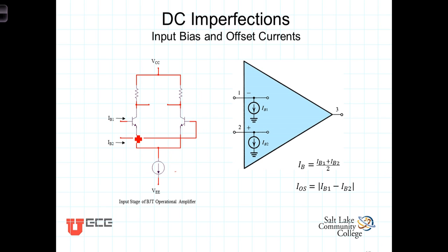These two transistors represent the inputs to the operational amplifier. We model those two bias currents as independent current sources flowing into each of the two terminals, both the inverting and non-inverting terminal.